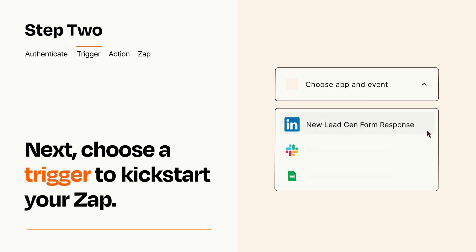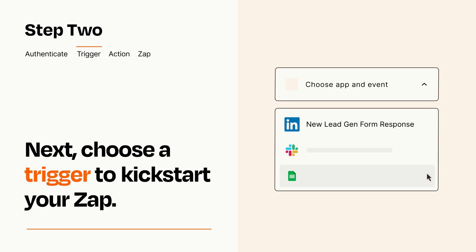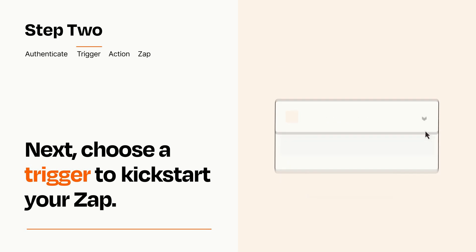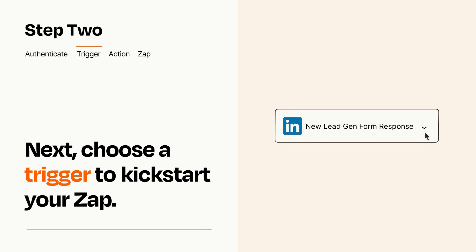Now let's set up your trigger, which is the event that starts your Zap. Pick the trigger event that you want from the list. When you set up this step, your Zap will pull in test data from your trigger app that you'll see later when setting up your action app.